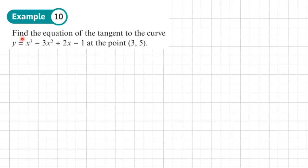Example 10: find the equation of the tangent to the curve y equals x cubed minus 3x squared plus 2x minus 1 at the point (3, 5). So we're finding the equation of a tangent at this point. Let me write down the steps.